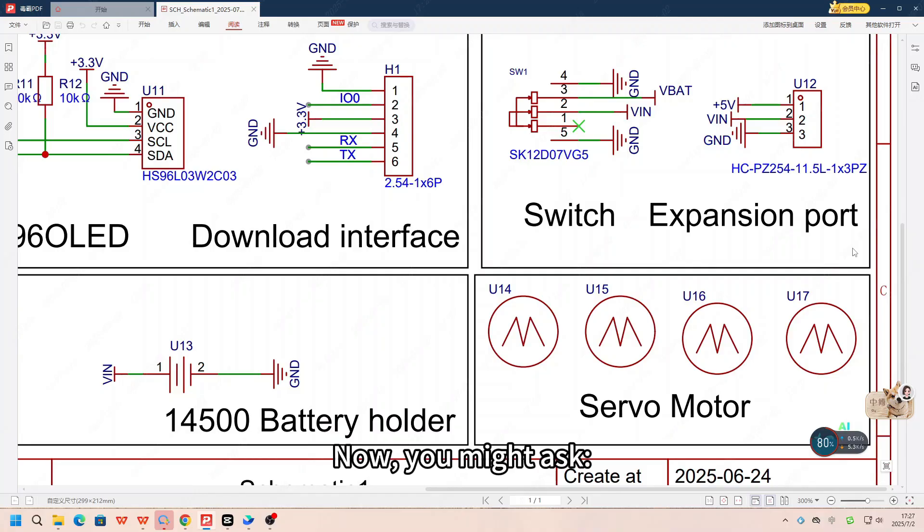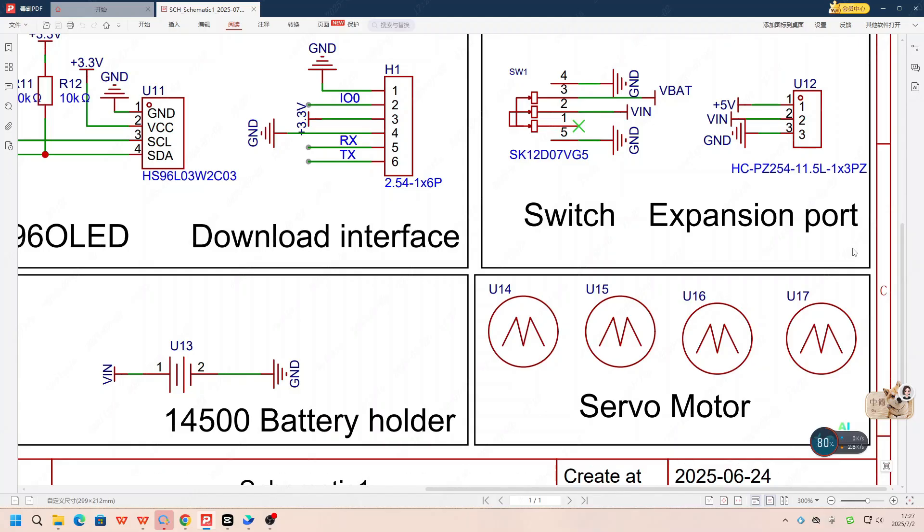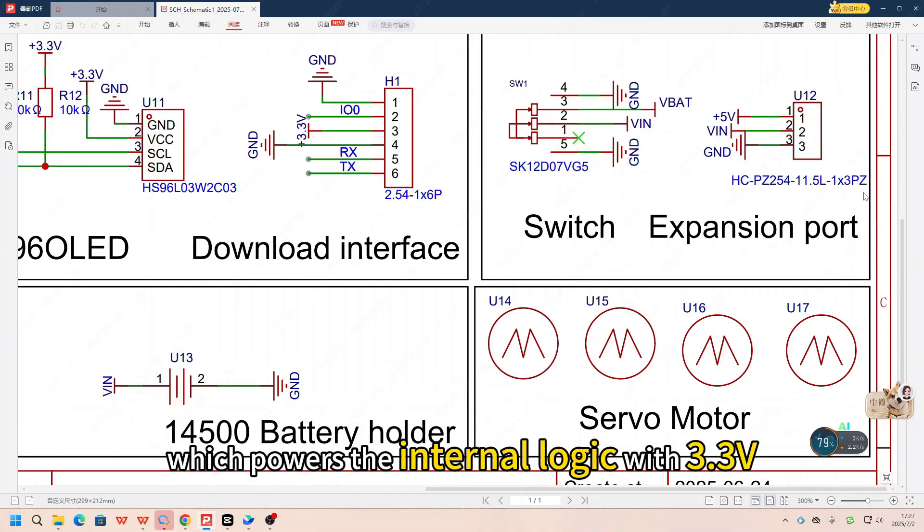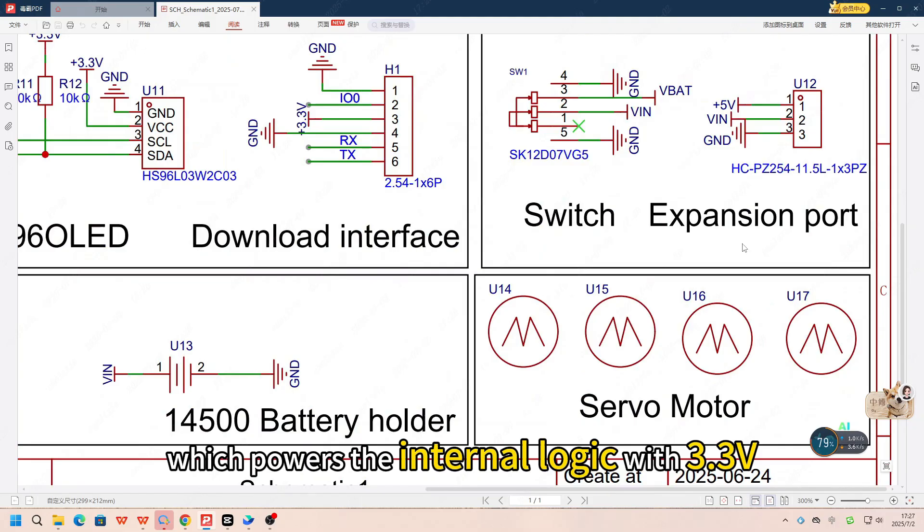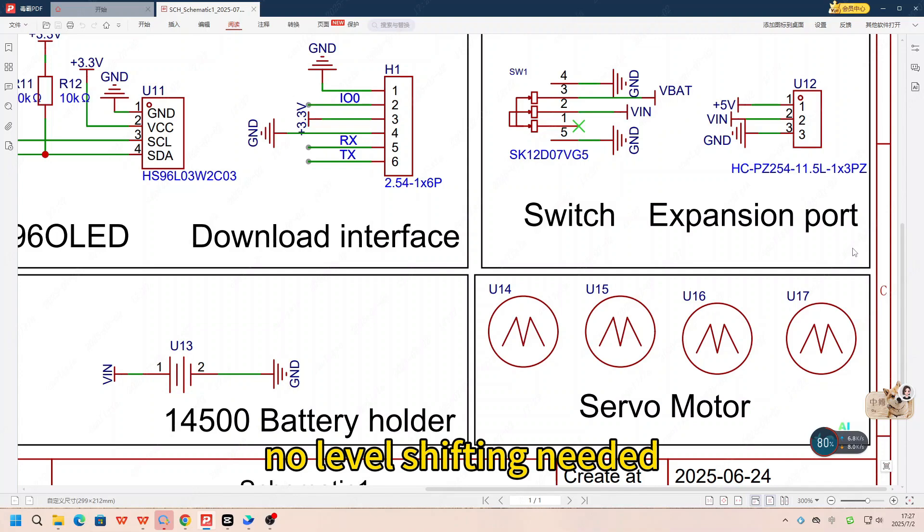Now you might ask, the controller runs at 3.3V, but the servos need 5V. Doesn't that cause issues with the PWM signal? Actually, no. That's because most servos include their own onboard regulator, which powers the internal logic with 3.3V. So they are already compatible with 3.3V logic signals, no level shifting needed.